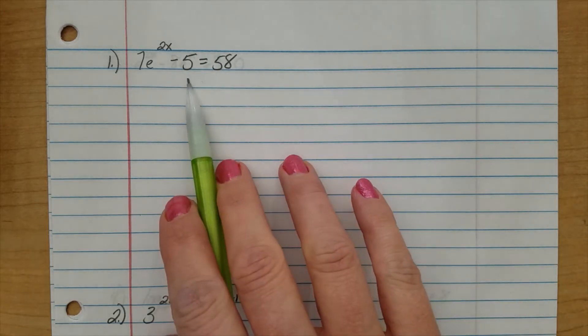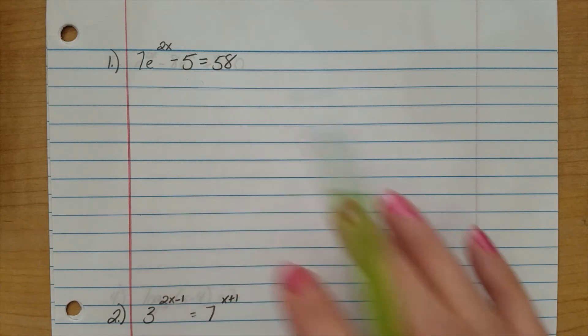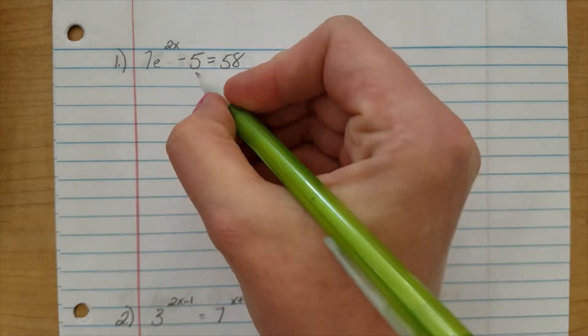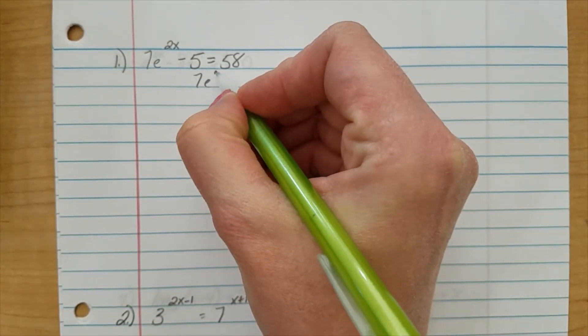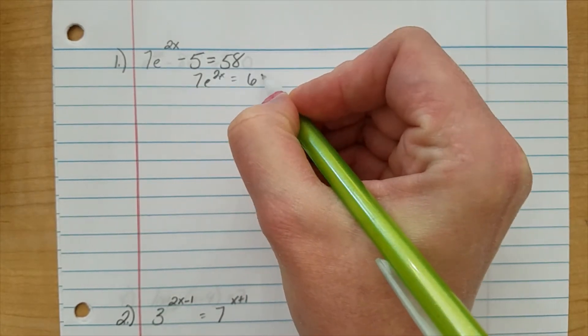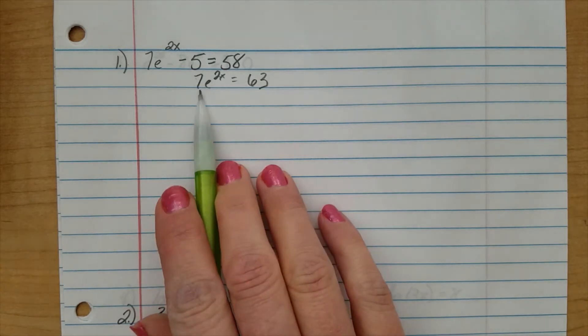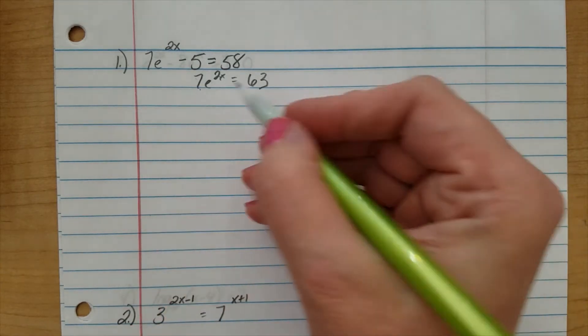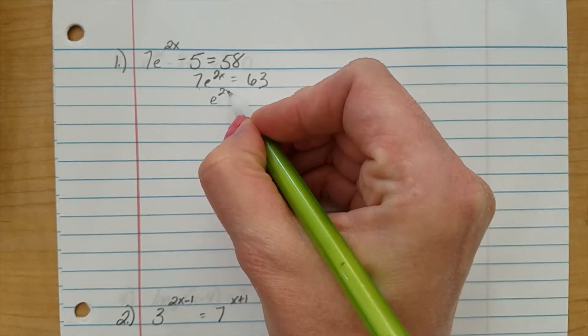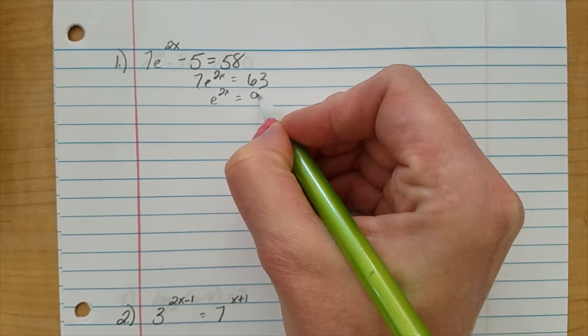Okay, so I'm going to keep using those properties of equality that I always have when solving for a variable. Notice here we have a minus 5. We're just going to add that 5 to both sides of the equation. 7e to the 2x equals 63. I'm still working at getting x isolated. We undo multiplication with division. We'll divide both sides by 7. e raised to the 2x equals 9.